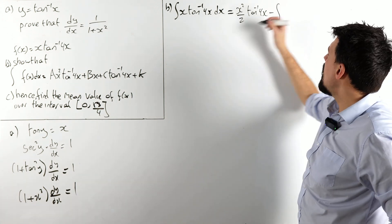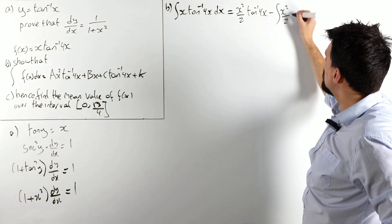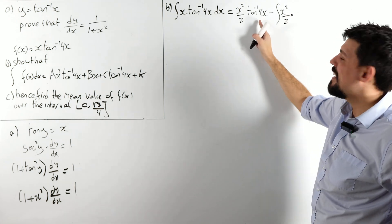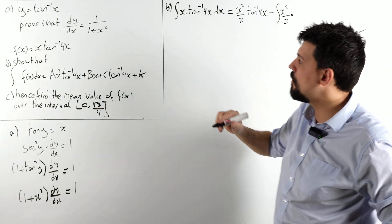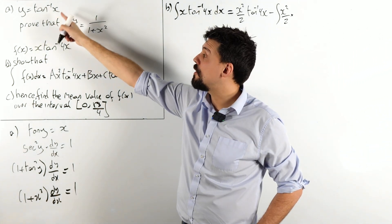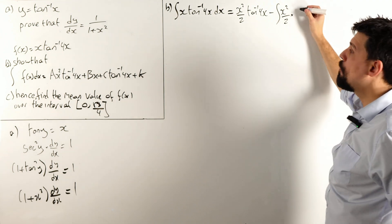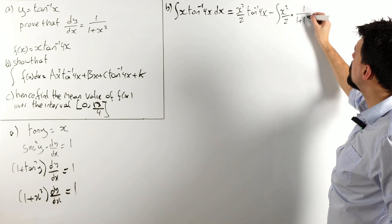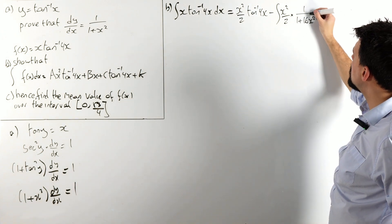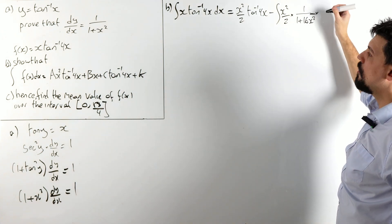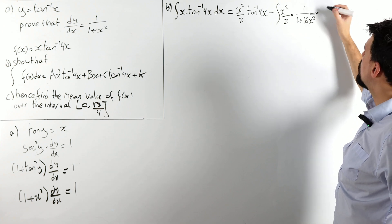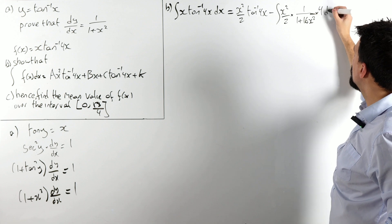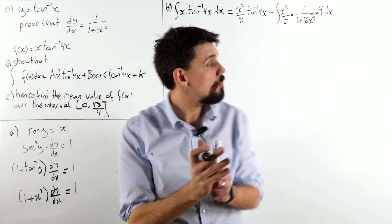Minus the integral, integrate the x and differentiate tan minus 1 of 4x. Now, we do need to be a little bit careful, because that was for tan minus 1 of x. We've got 4x. We will pick up a chain rule. So, what do I get? I get 1 over 1 plus 4x squared, which is 16x squared. Chain rule, we will pick up a 4 on top, dx.